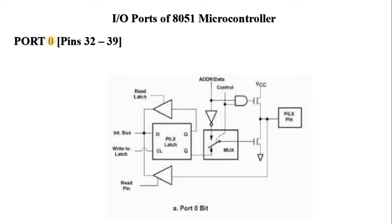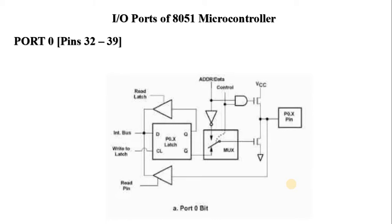Port 0 has address 80. Port 0 has a D-type latch, unidirectional buffer, and 2 field effect transistors at each pin. It does not have an internal pull-up resistor. An external pull-up resistor is needed when port 0 is defined as an output port. Port 0 of the AT51 has 2 main functions: it is used as a simple input-output port and to access external memory in conjunction with port 2.